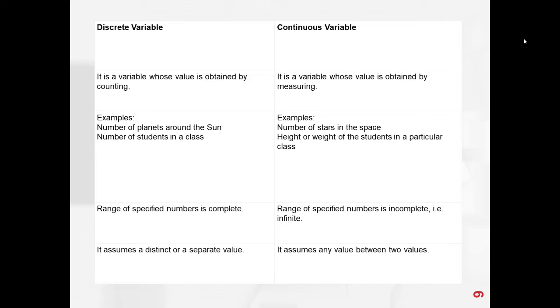A continuous variable is a variable whose value is obtained by measuring. For example, the number of stars in space, or the height or weight of students in a particular class.